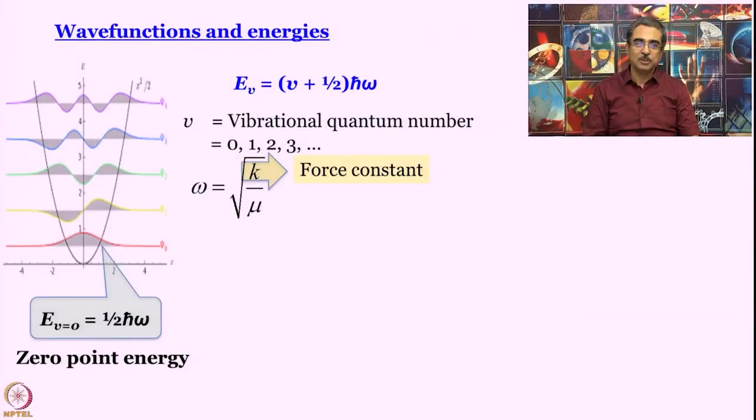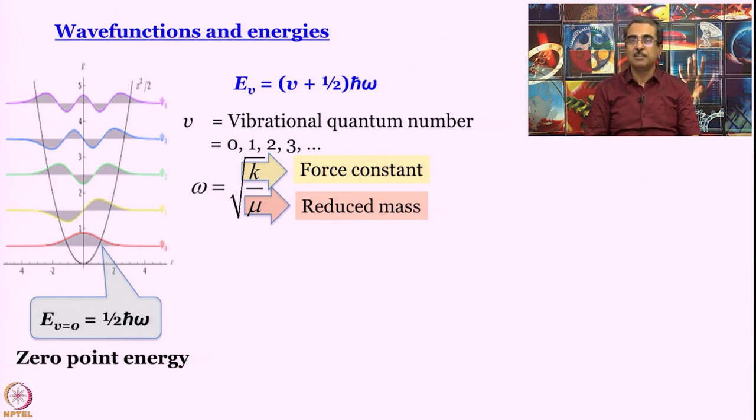We know that angular frequency for a simple harmonic oscillator is ω = √(k/μ), where k is force constant and μ is reduced mass. So if you can somehow determine ω, then we should be able to determine force constant, provided I know which atoms I am working with. If I know which atoms I am working with, I know their masses. How do I find this? Let us see. What is the energy gap between two successive levels?